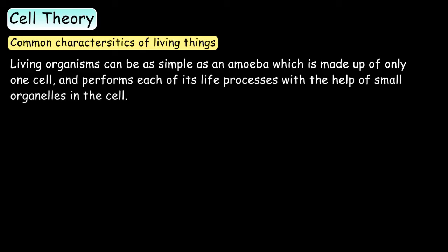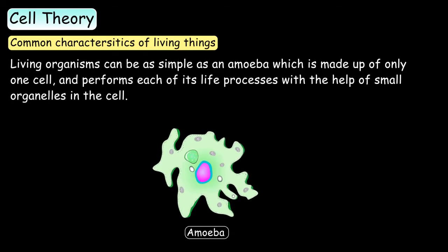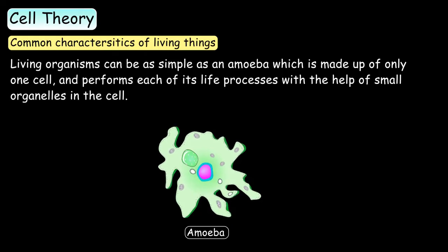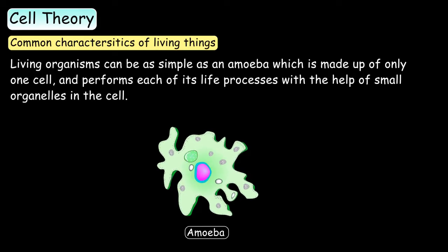Living things can be as simple as an amoeba, which is made up of only one cell. But the amoeba is still able to perform each of its life processes with the help of small organelles in the cell.